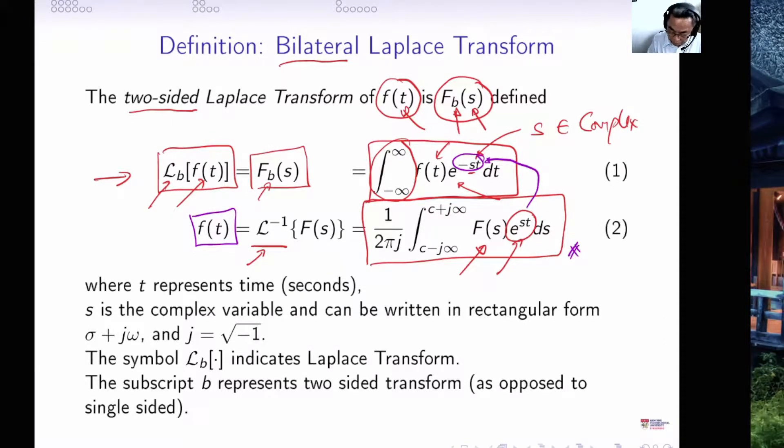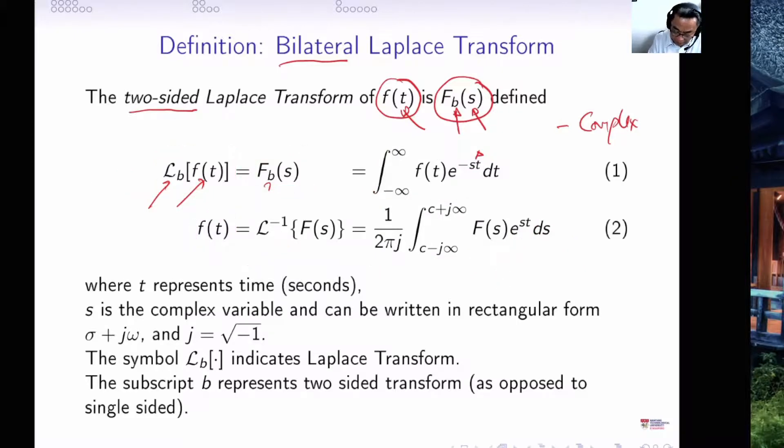To conclude, let us remind ourselves what s is. The s here, s is the complex number, and the complex number is the entire complex plane, denoted by σ + jω.